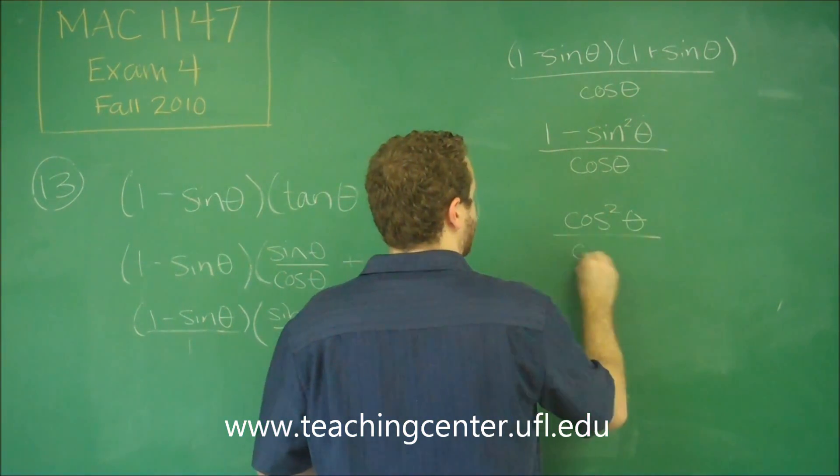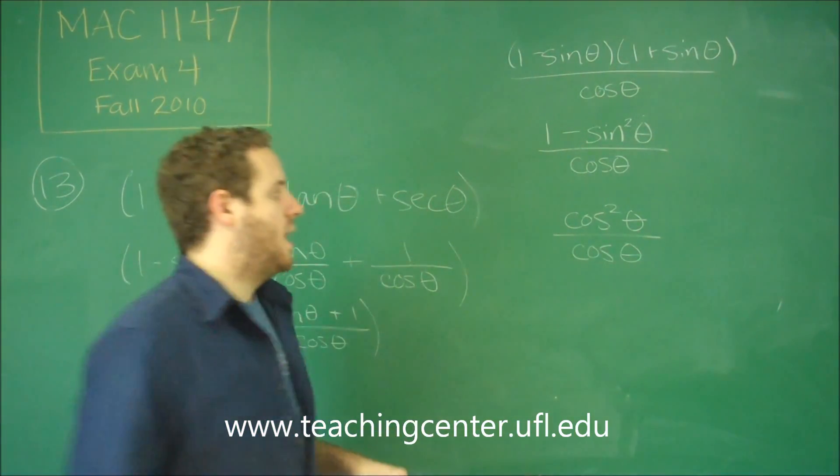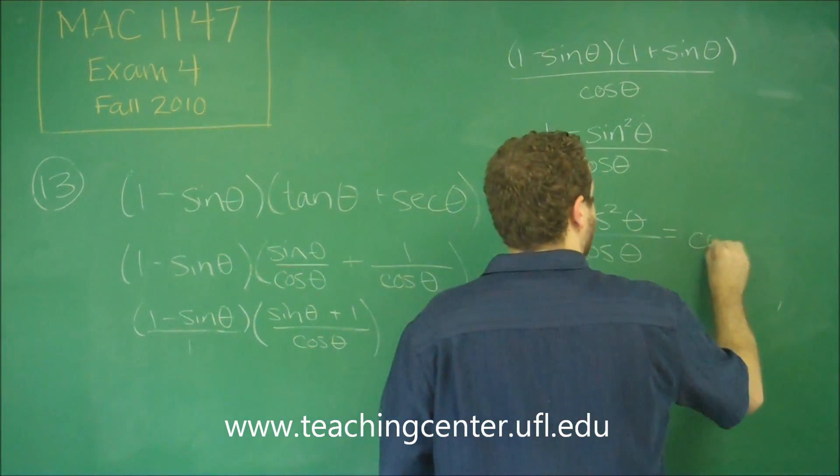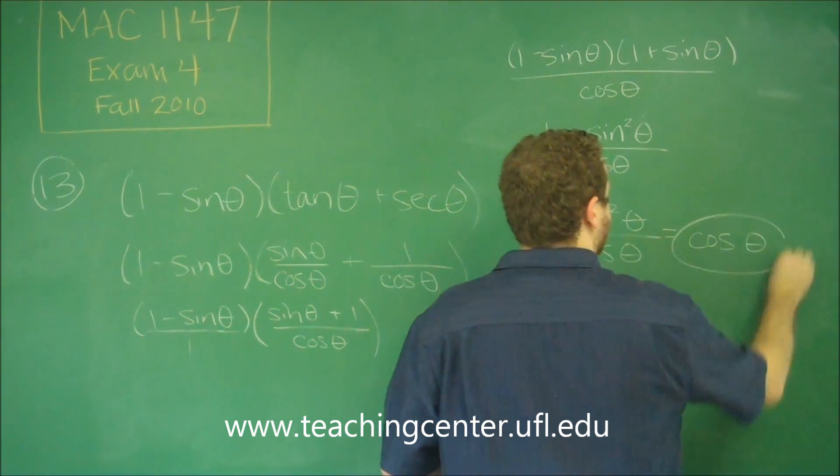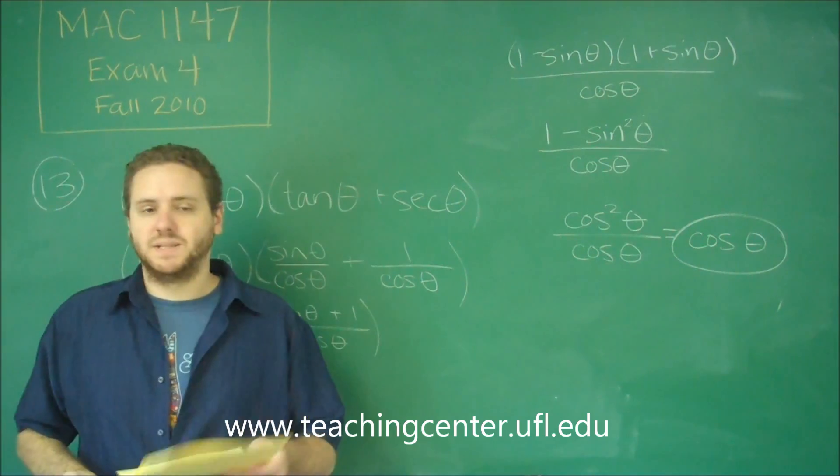So we get cosine squared over cosine. And finally, that means one of them cancels out. And we just get cosine theta as our result, which is answer choice E.